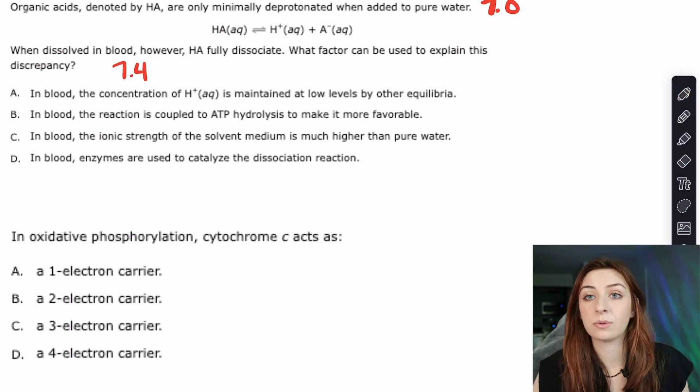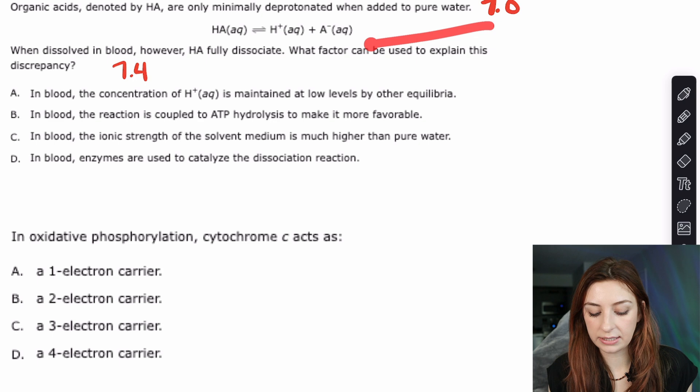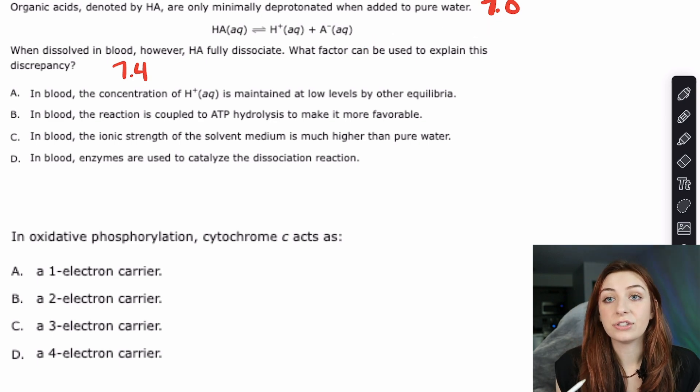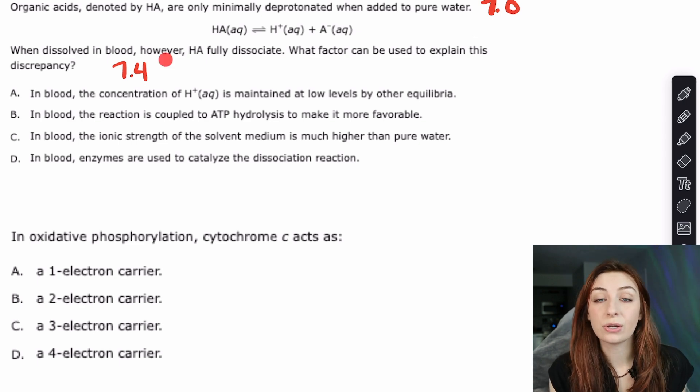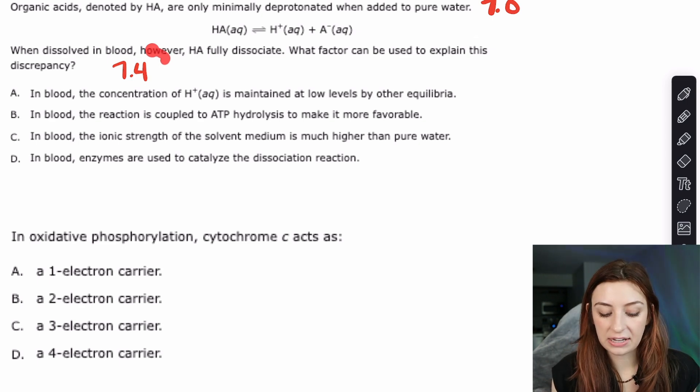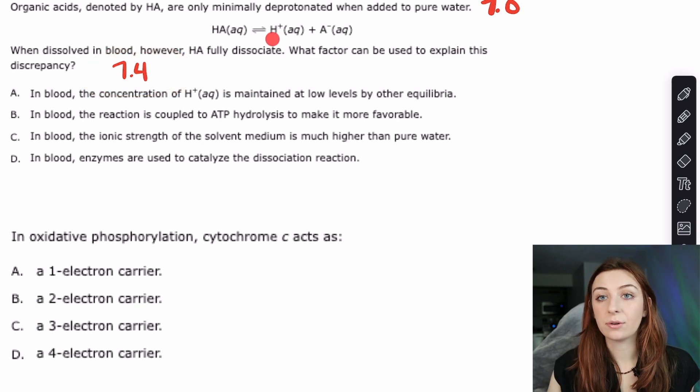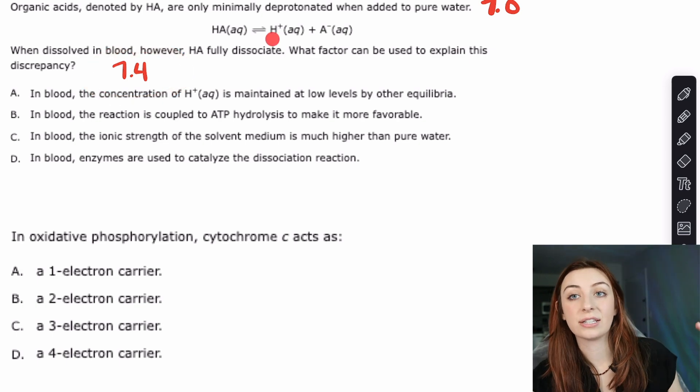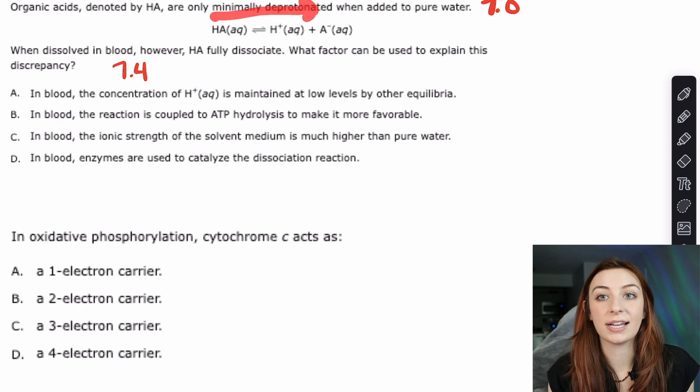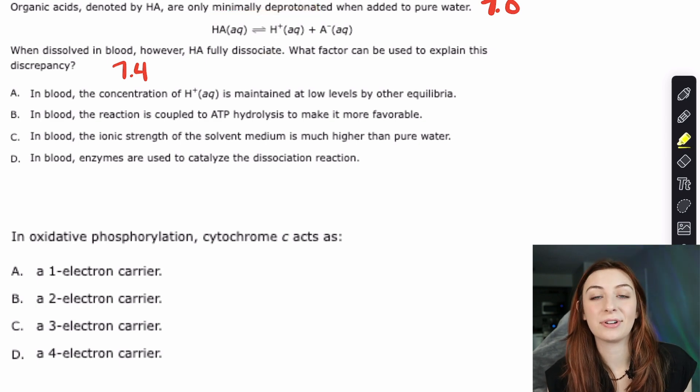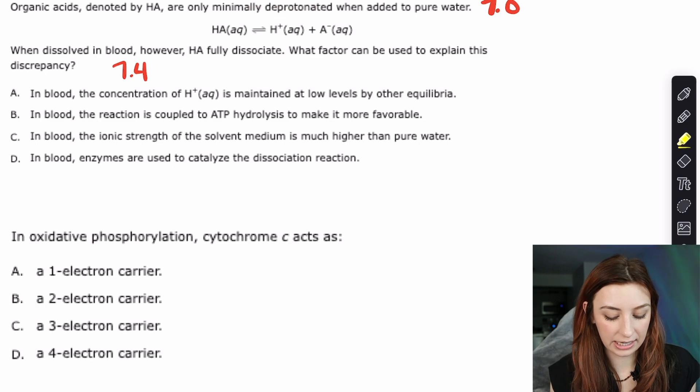Would an increase in pH cause this acid to dissociate more? Yes. Pretty much the only thing that's really going to matter on the MCAT for the dissociation of an acid is going to be the pKa of the acid and the pH of the solution that it's in. And at a pH of 7.4 which is the pH of blood that's higher pH, that's less acidic, that's more basic. That's fewer protons in the solution and therefore we're essentially decreasing the right side of this equation and so it's going to run to the right. That's Le Chatelier's principle.